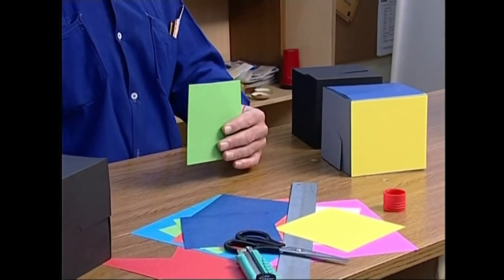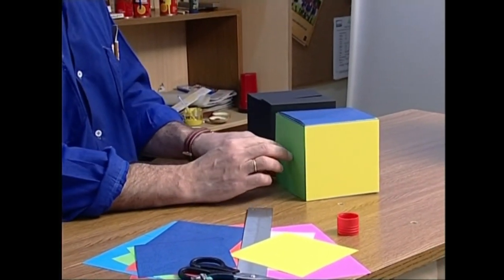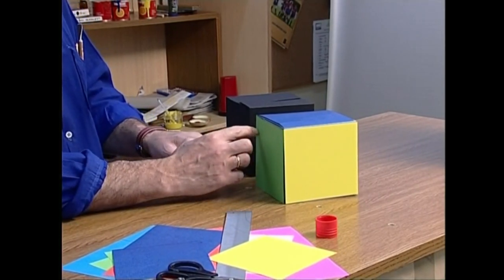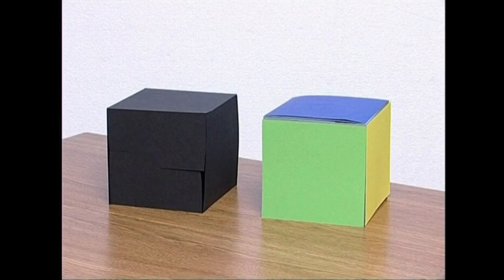Eta kubo honen aldeetako bat beste kolore batez estaliko ba genu, nola ikusiko genuke? Jarri bat abestearen ondoan eta begiratu arretaz. Ez altzai zue iruditzen okerrago ikusten dela?